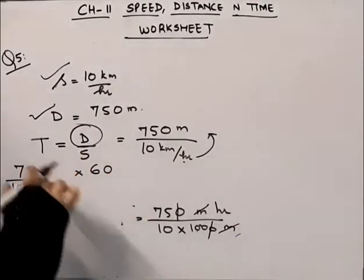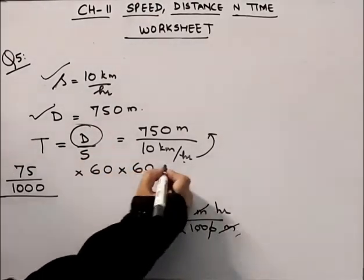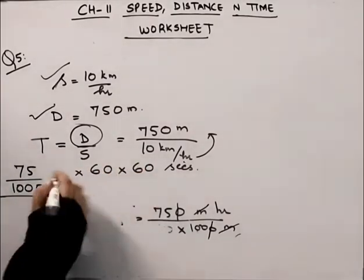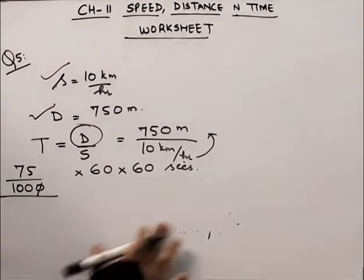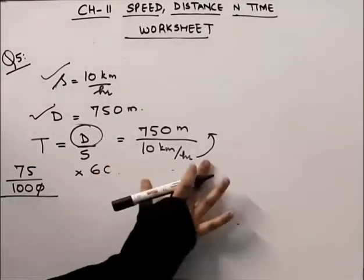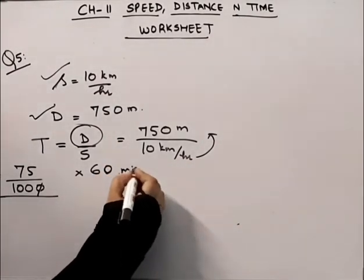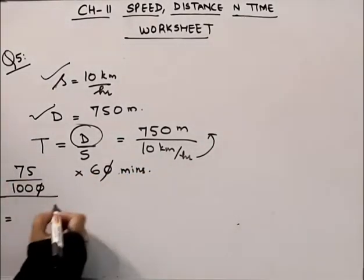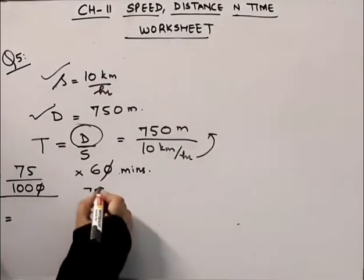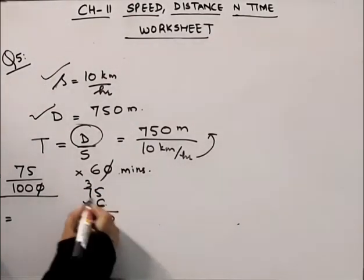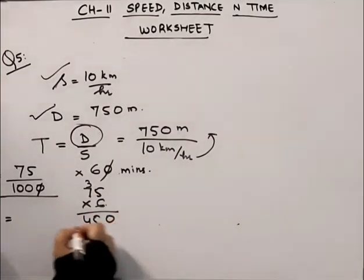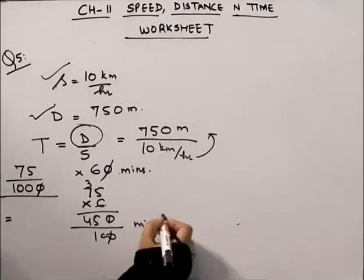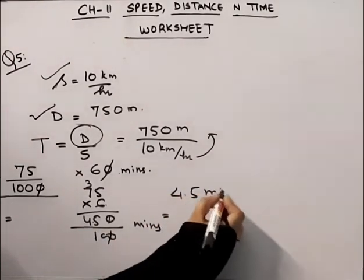If we multiply further again by 60, the answer will come in seconds. Let's convert to minutes. The zeros cancel out, giving us 75 multiplied by 6. That is: 6 fives are 30, 6 sevens are 42 plus 3 is 45 — so 450 divided by 100 minutes, which equals 4.5 minutes.